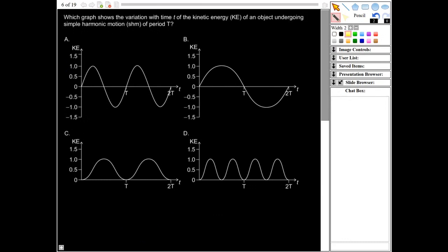Okay, this one says, which graph shows a variation with time t of kinetic energy KE of an object undergoing simple harmonic motion, SHM of period T? Alright, now, so we're talking about kinetic energy. Now kinetic energy is a scalar, it's not a vector. So since it's a scalar, we can't have negative values, all the values should be positive. So we can eliminate A and B straight away, because they involve negative values, it's got to be a scalar. So it has to be C or D.